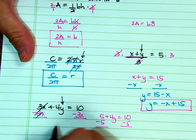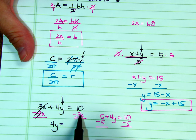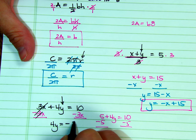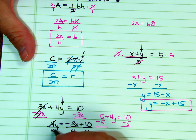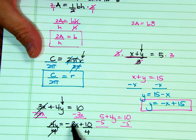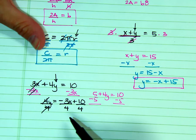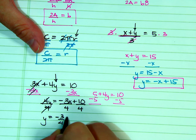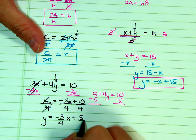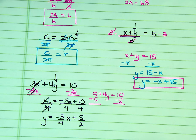Those add out. 4Y equals, I am going to follow what I did on the last one and write the variable first, the X first. So negative 3X plus 10. Divide both sides by 4. And typically when we get into linear equations, you will see it written twice. So negative three-fourths X plus five-halves. Always reduce your fractions.